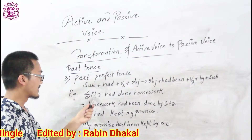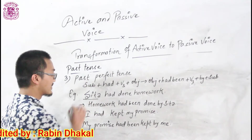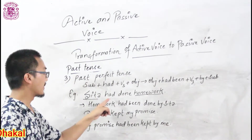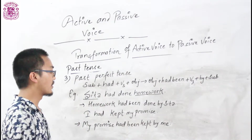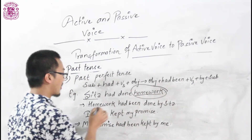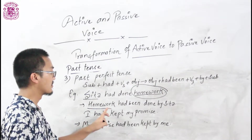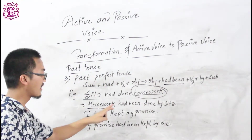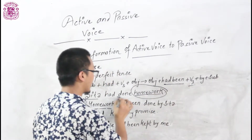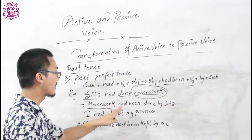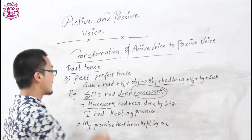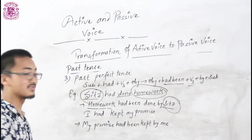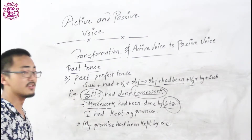Now let's see some examples. 'Sita had done homework.' Here 'Sita' is used as subject and 'homework' is used as object. While transforming this sentence into passive voice, we write 'homework' as subject. Then: 'Homework had been' — and then V3. The V3 of 'done' is 'done' — it's the same. So: 'Homework had been done by Sita.' You write 'Sita' the same — no need to change if a person's name is given as subject.